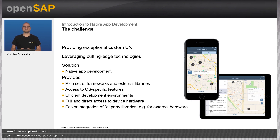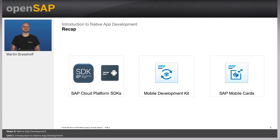A typical example is an external laser scanner that you want to use on the workshop. We have discussed already a couple of development options included in the mobile services — the mobile development kit and SAP mobile cards. Today, we focus on the SAP Cloud Platform SDK, which runs on top of the cloud mobile services. Here, we will focus on the Android SDK for the remaining units.